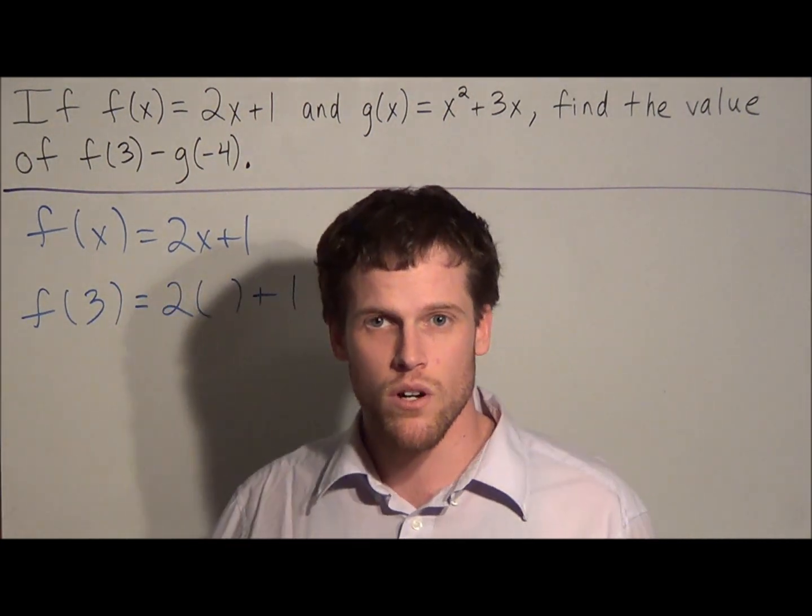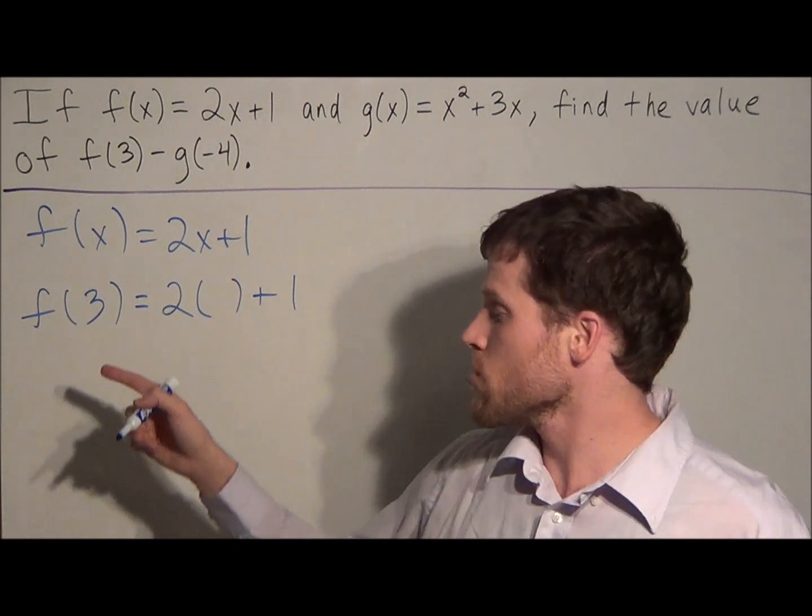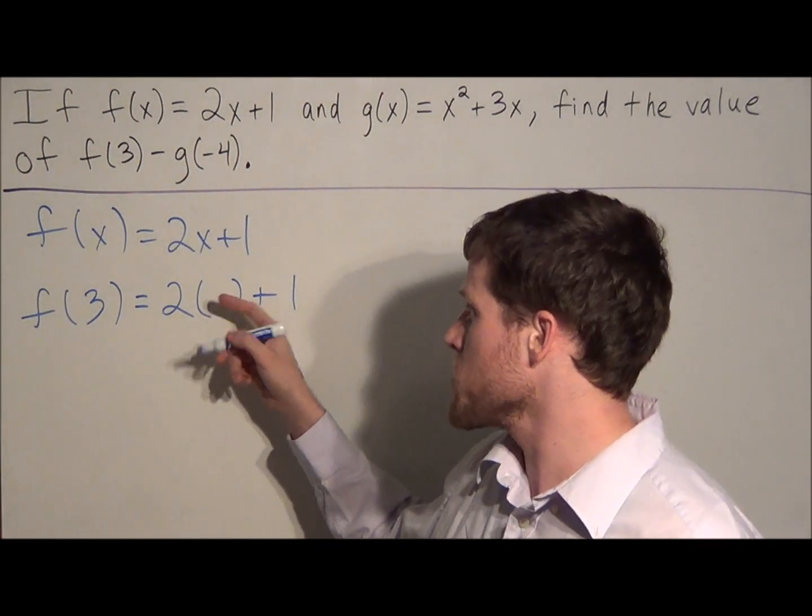So notice instead of 2x plus 1, we have 2 times blank plus 1. So now we can just plug 3 in wherever we see a blank.